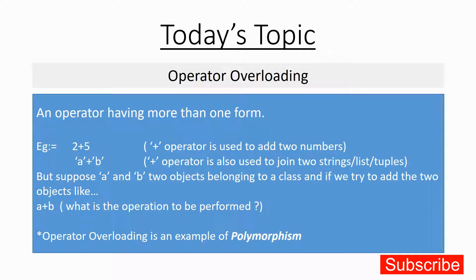Operator overloading or polymorphism means there is one operator with multiple forms. The plus operator is used to add two numbers, and the same plus operator is also used to join two strings. In fact, this plus operator is also used to join two lists and tuples as well.